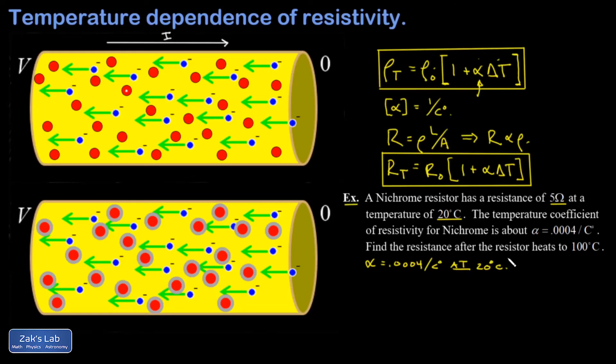We're asked to find the resistance after the resistor heats up to 100 degrees Celsius. So this is a plus 80 for delta T. In this case, I'm using the second formula. I don't have to go back and worry about resistivity and the length and cross-sectional area of the resistor. I know the original resistance is 5 ohms. I'll find my new resistance at the temperature T by taking the original resistance, 5 ohms, and multiplying by 1 plus alpha times delta T.